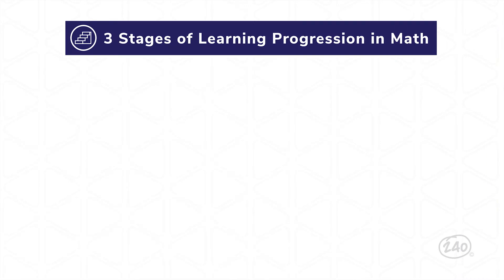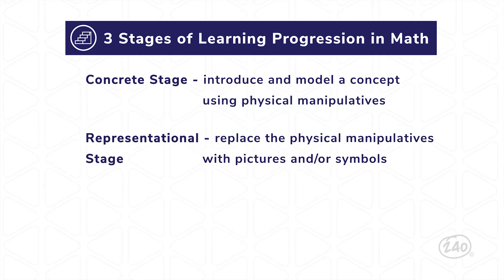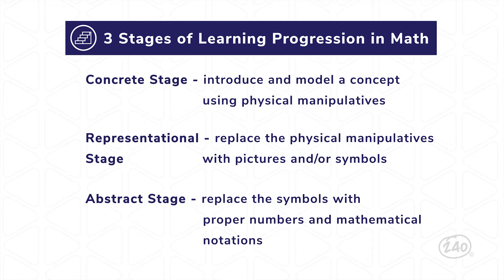You'll need to know the three basic stages of learning progression in math, including how students move through each of those stages. First up is the concrete stage, where you introduce and model a concept using physical manipulatives like counting blocks or fraction tiles. Then we move on to the representational stage, where we replace the physical manipulatives with pictures and symbols — sometimes called the symbolic or pictorial stage. Finally, we reach the abstract stage, where we replace the symbols with proper numbers and mathematical notations.